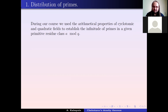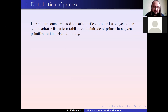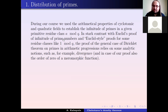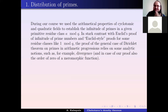We used the arithmetical properties of cyclotomic fields to establish the infinitude of primes in a given primitive arithmetic progression, or primitive residue class modulo q. In stark contrast with the Euclid-style proof of the infinitude of primes in special arithmetic progressions such as 1 mod q or 3 mod 4, the proof of the general case of Dirichlet's theorem uses analytic techniques, relying crucially on the notion of divergence of series.